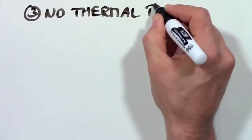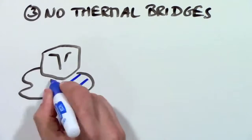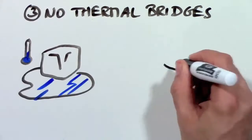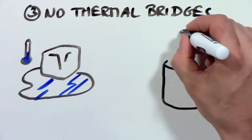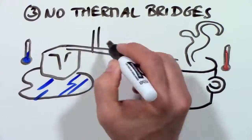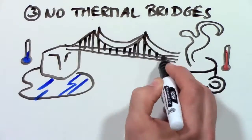3. No thermal bridges. A thermal bridge is like a road for heating energy in which warmth can travel right through your walls. As a matter of fact, most of our houses have thermal highways in our walls where heat can easily travel to the outside.